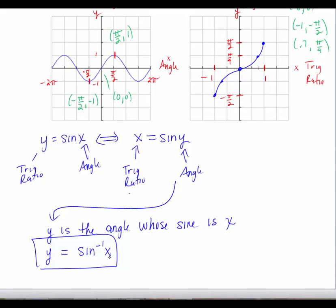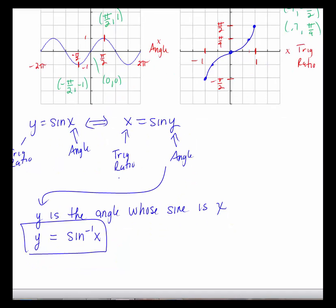And so now we have an input value which is a trig ratio, and the output value is the angle. So, just like on your calculator, we use the inverse sine button when we knew the ratio, but we didn't know the angle. We're trying to find the angle.